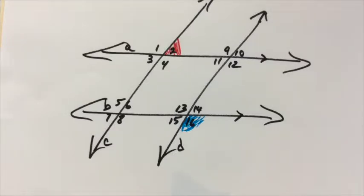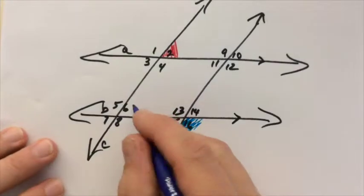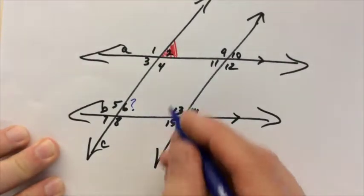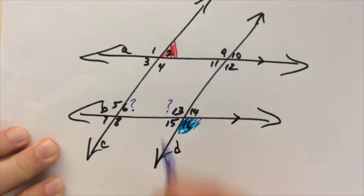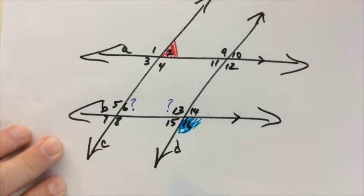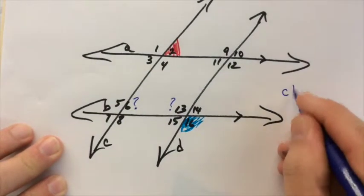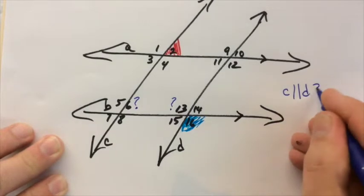And then you were asked, what are the measures of this angle and this angle? And then you were asked, is line C parallel to line D?